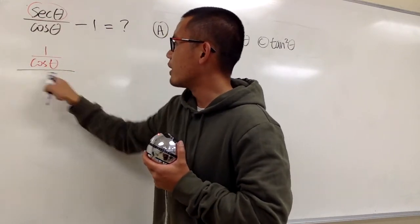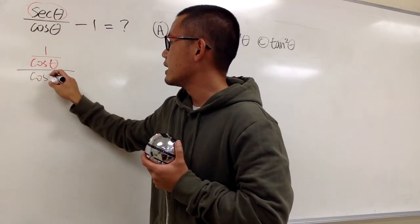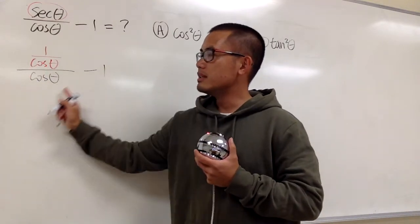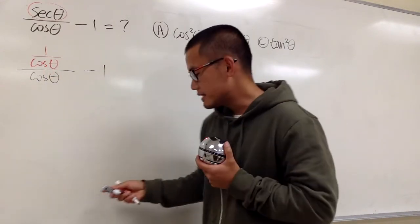And then we still have this over this cosine theta, and then we still have the minus 1 after this. And now, this is a complex fraction, so let's go ahead and fix that.